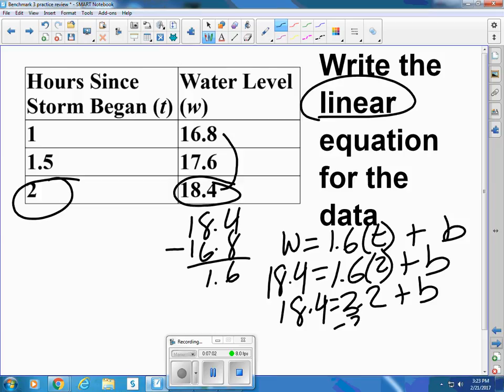Let's subtract the 3.2. That would be 15.2 equals b. So now I can finish writing the equation. The equation for the water is 1.6 every hour, starting at 15.2 inches deep at hour zero.